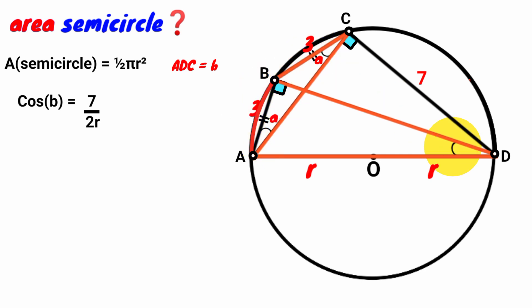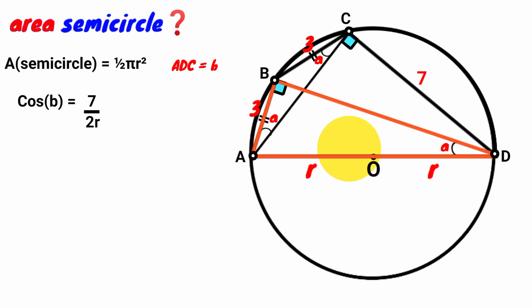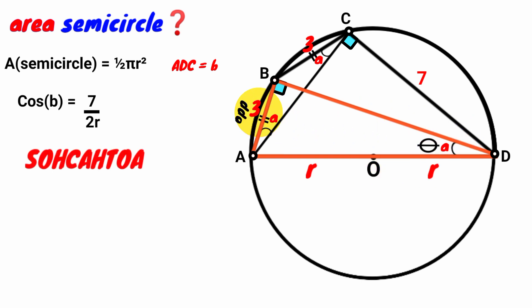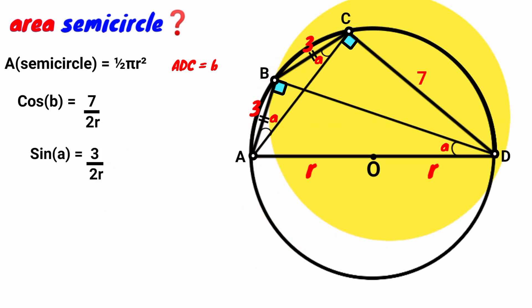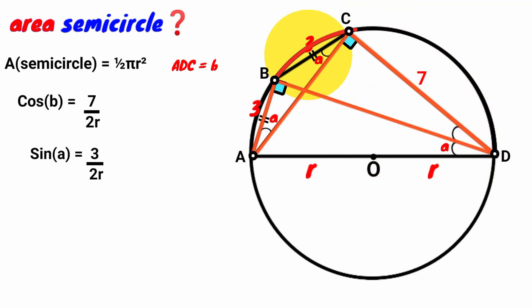That is, the angle subtended by an arc to any point on the circumference is equal. Since angle ACB has size A, angle ADB must also be A. We look at this right-angle triangle: the length of one side is unknown, but this side is 3 units and the hypotenuse is 2R. Using SOH: sin θ = opposite over hypotenuse. Theta is A, the opposite is 3, and the hypotenuse is 2R. So sin A = 3 over 2R. Save this equation. Also, this angle and this angle are subtended by the same arc, so they are congruent — since one is A, the other must also be A.